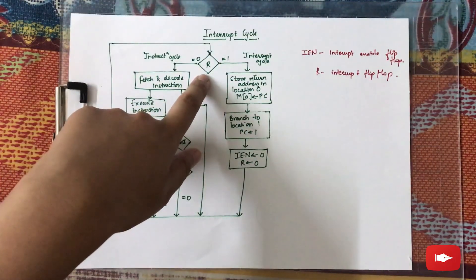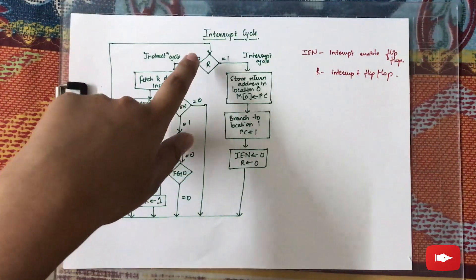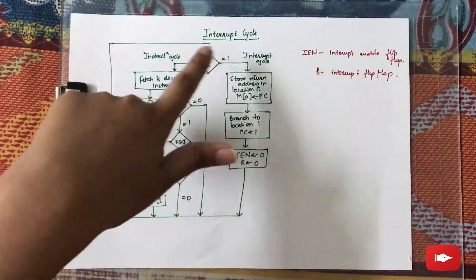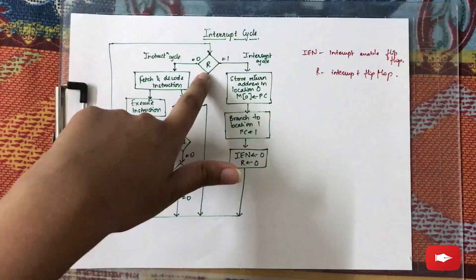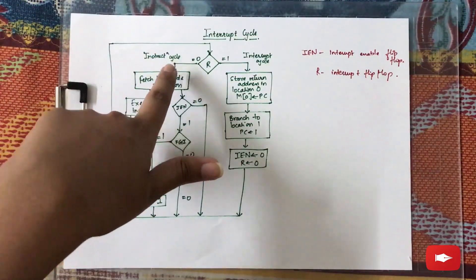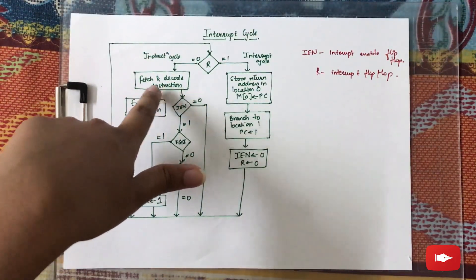R is the interrupt flip-flop. Now the value of R determines if the instruction will enter the instruction cycle or the interrupt cycle. If it is zero, the normal instruction cycle is executed - that is, first two phases: fetch and decode instruction are executed.